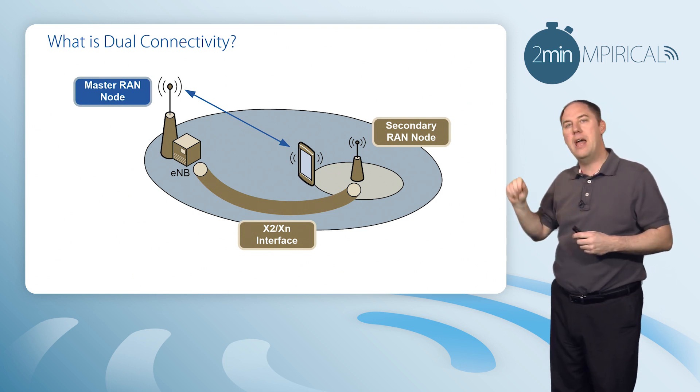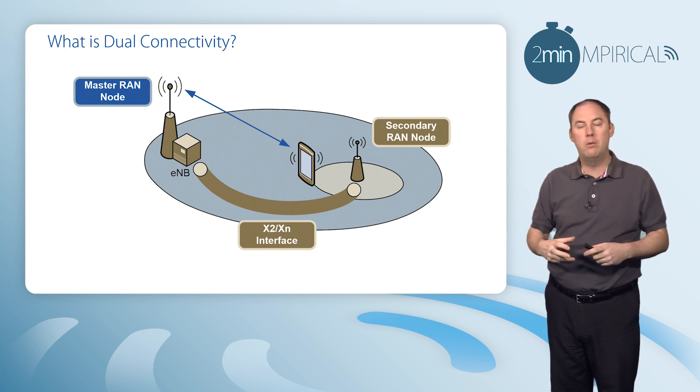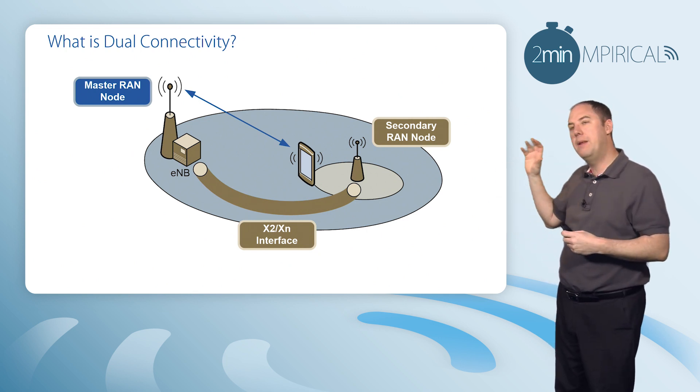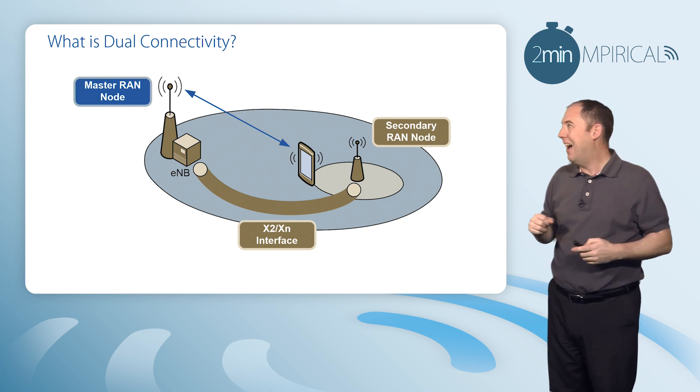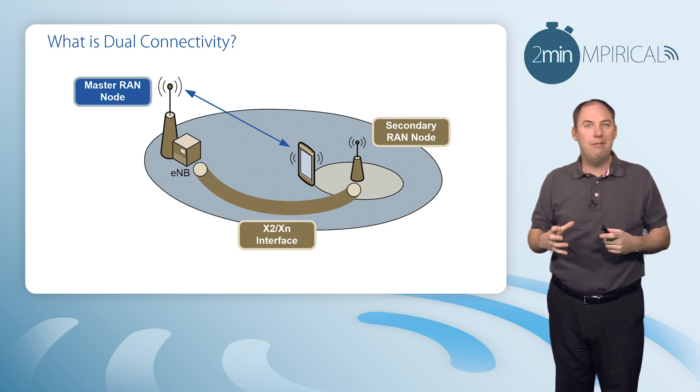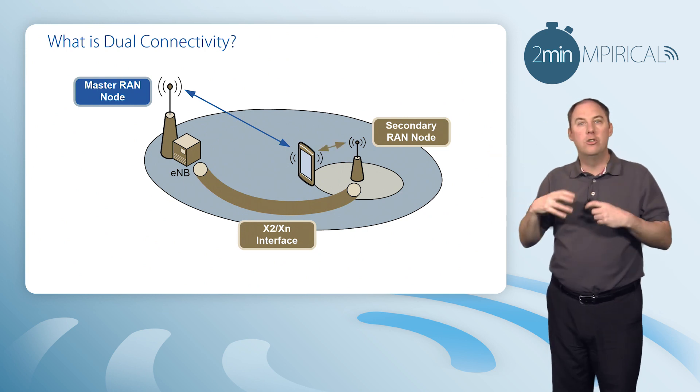This would be across the X2 interface on a 4G network, but this is equally applicable to 5G where it would be the XN interface. And the data now arriving at that secondary RAN node can be scheduled to that mobile.